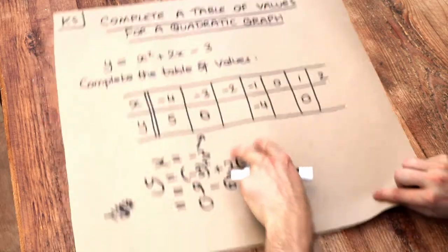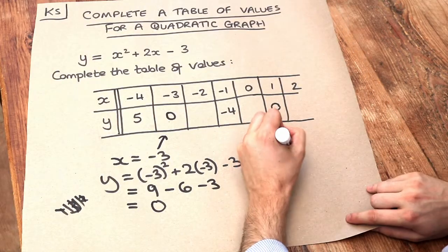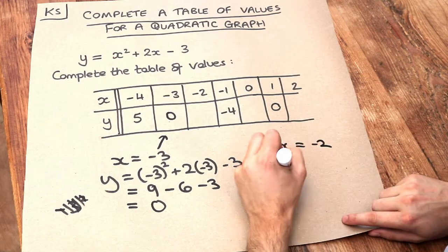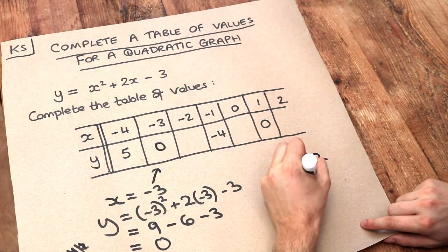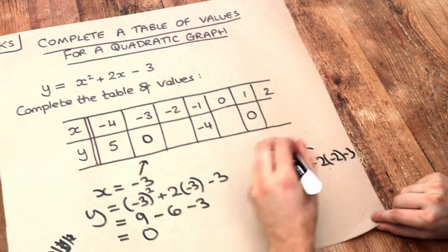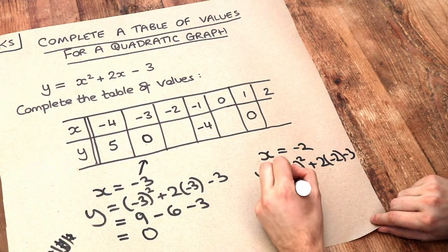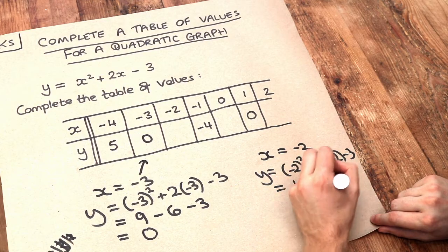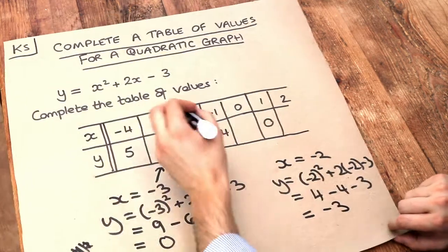Let's do it with minus 2 now. If x is minus 2, then y equals minus 2 squared plus 2 times minus 2 minus 3. That equals 4 minus 4 minus 3, which equals negative 3.